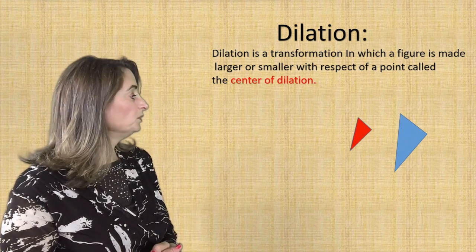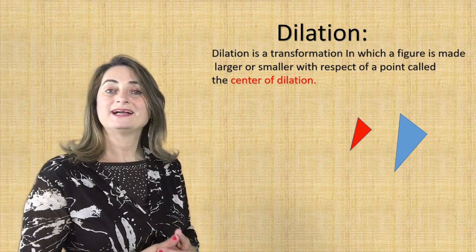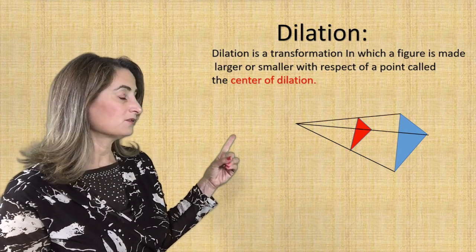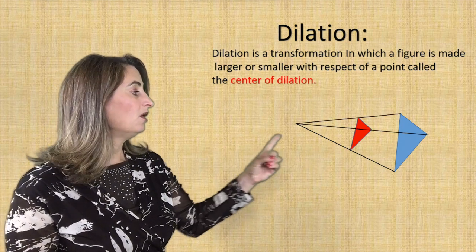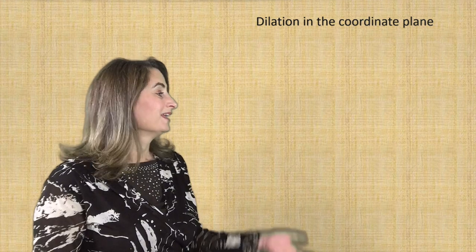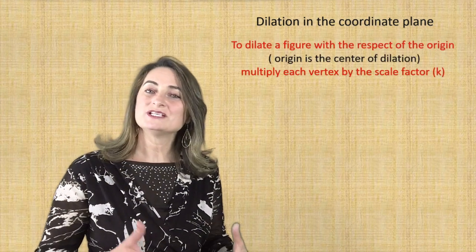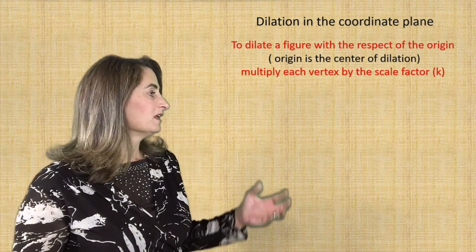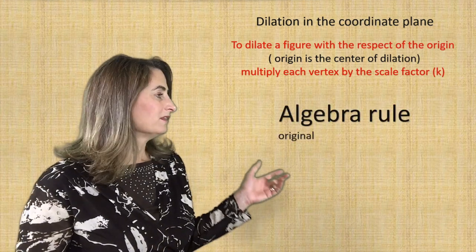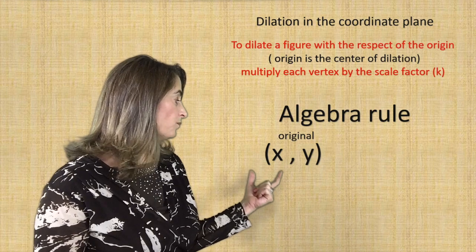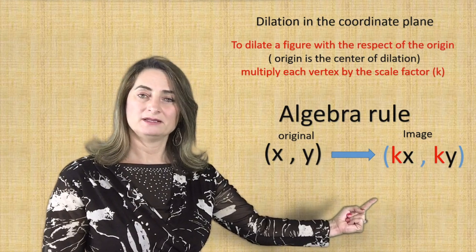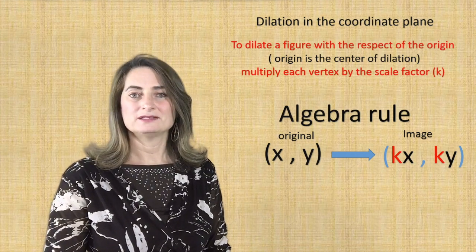Look at this blue triangle and the red triangle that is shrunk or made smaller. If I connect each corresponding vertex, all three of them will meet at one point. To dilate a figure with respect to the origin — meaning the origin is the center of dilation — multiply each vertex by a scale factor, known as k. The algebraic rule: the original coordinate is (x, y), and the image is (kx, ky) — multiply each x and each y by the scale factor.